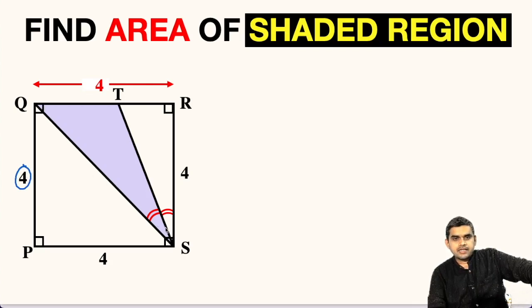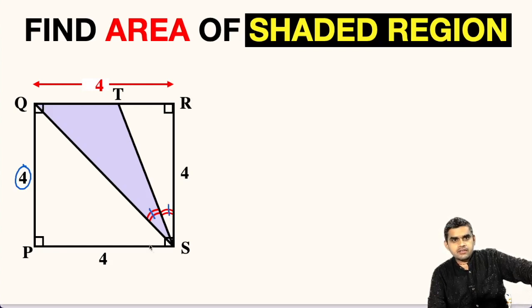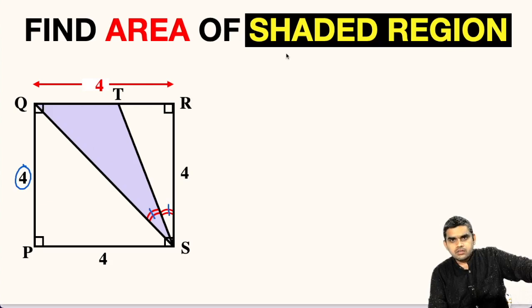QS is the diagonal of this square, and ST is a line segment such that a certain angle equals another given angle. We are asked to find the area of the shaded region — the triangle shaded in blue. The area of any triangle can be written as half times the base multiplied by the altitude.